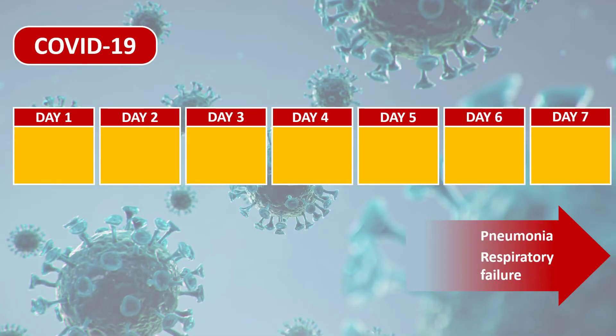In COVID, significant clinical deterioration usually starts after five, six, seven days of symptoms. Once dyspnea does set in in COVID, it can rapidly progress into respiratory failure within a day or two. But it usually starts with seemingly mild symptoms that last for days. This brutal onset is highly characteristic for bacterial pneumonia.